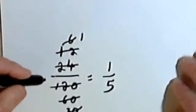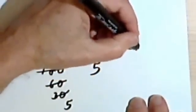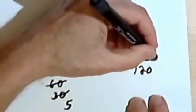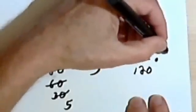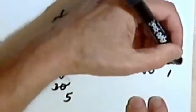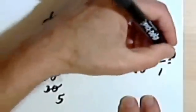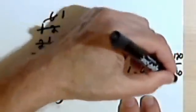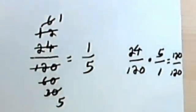And quickly we can check that. 24 over 120 times the reciprocal of 1 fifth is 5 over 1. 5 times 24 is 120. 1 times 120 is 120. This equals 1. It works.